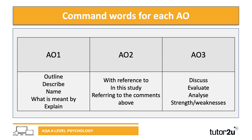In terms of command words, we've already seen some from those previous questions, but here are a few command words for each assessment objective — by no means an exhaustive list. For AO1, command words to look out for include: outline, describe, name, what's meant by, and explain. For AO2, remember you're trying to explain a scenario or stem, so phrases like 'with reference to' or 'referring to the comments above' signify an AO2 objective. For AO3, if you get a question with discuss, evaluate, analyse, strengths and weaknesses — that signifies an AO3 assessment objective.